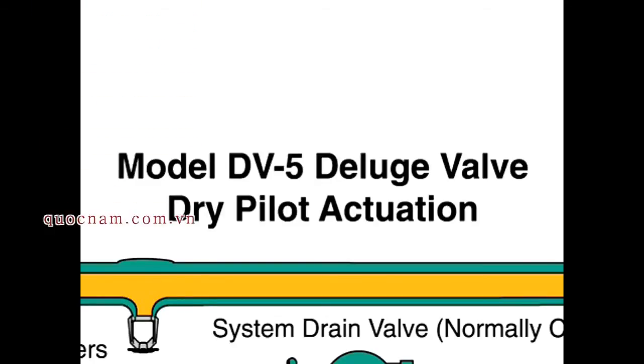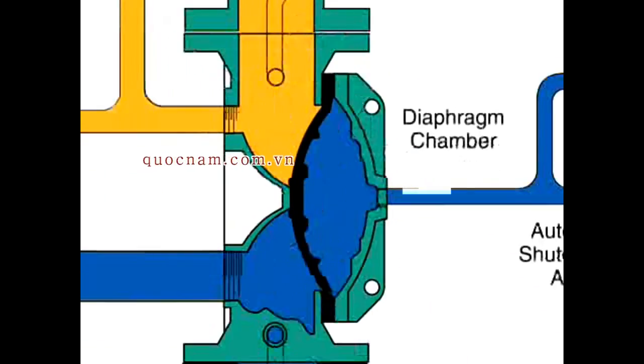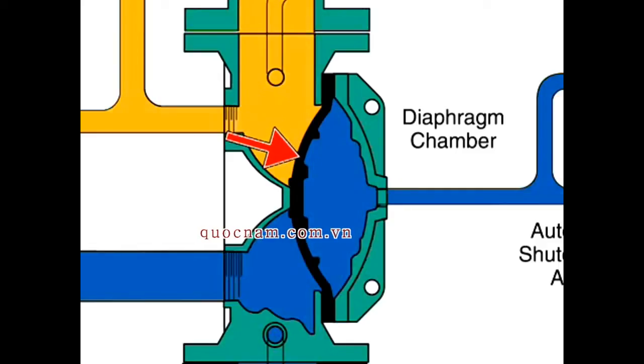The DV5 deluge valve with dry pilot actuation. The model DV5 deluge valve is a diaphragm-style valve that depends upon water pressure in the diaphragm chamber to hold the diaphragm closed against the water supply pressure.